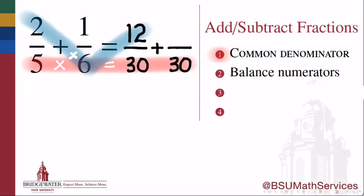So for example, multiplying the 2 and the 6 gives me a numerator of 12 for my first fraction, and 2/5 is the same thing as 12/30. For the second fraction, I'll multiply the other cross product 5 times 1 to get the numerator of 5, and 1/6 is the same as 5/30.